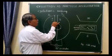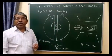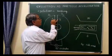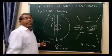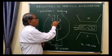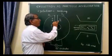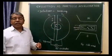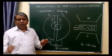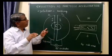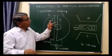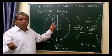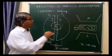Now, suppose this positive ion comes to the edge of D1, and at that time D1 becomes positive and D2 becomes negative. The positive ion will again be attracted into D2 and will again traverse a circular path. While crossing this gap, the positive ion will receive additional acceleration with increasing radius.